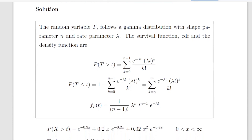This is the key part here. The random variable t follows a gamma distribution with shape parameter n. We're going to use n and lambda in this case, but there is also alpha and beta in other formulations — more or less a straight swap. We'll just use n and lambda for the time being. The survival function, the cumulative distribution function, and the density function are as follows.